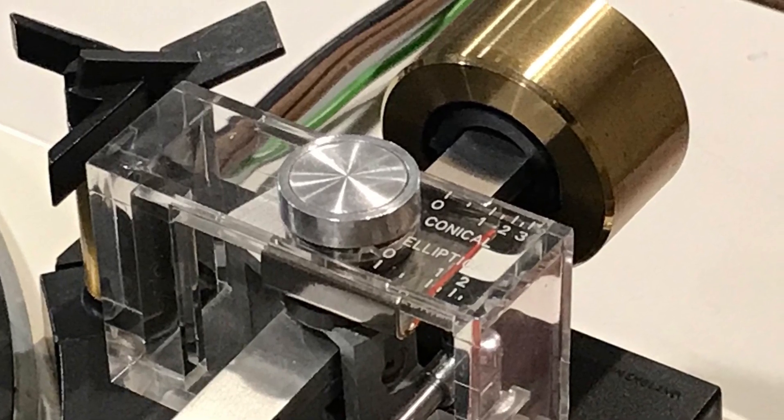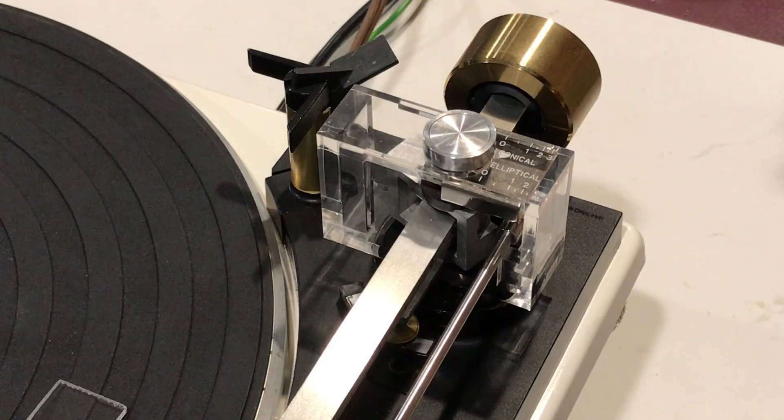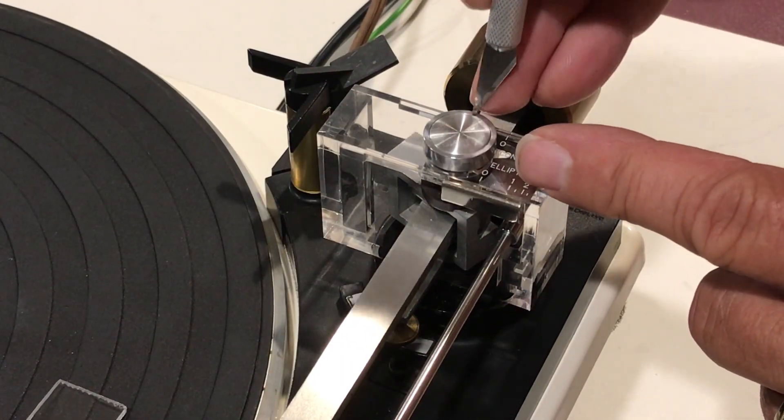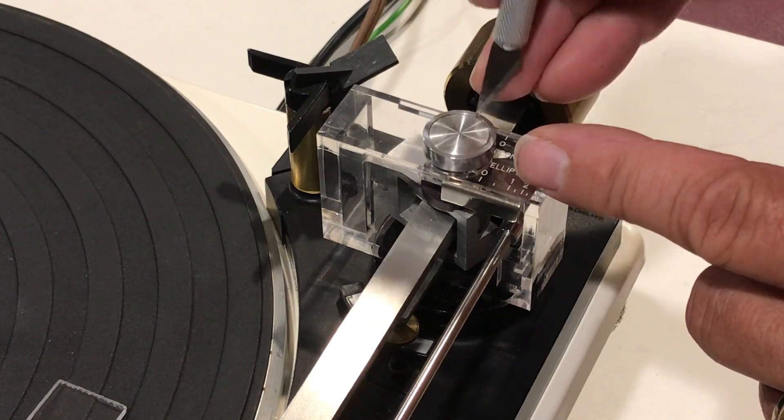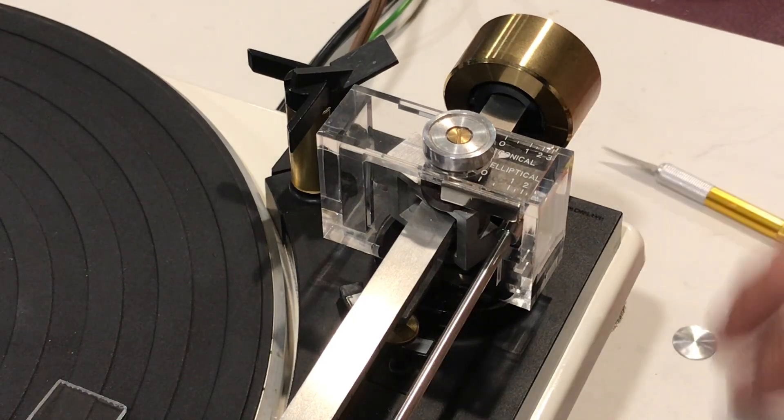Hi, here's a quick video on how to adjust the anti-skate mechanism on a Garrard 0100. First thing you're going to need to do is remove the stainless steel trim disc. I pry that up from a corner usually and then lift it off with an exacto knife.